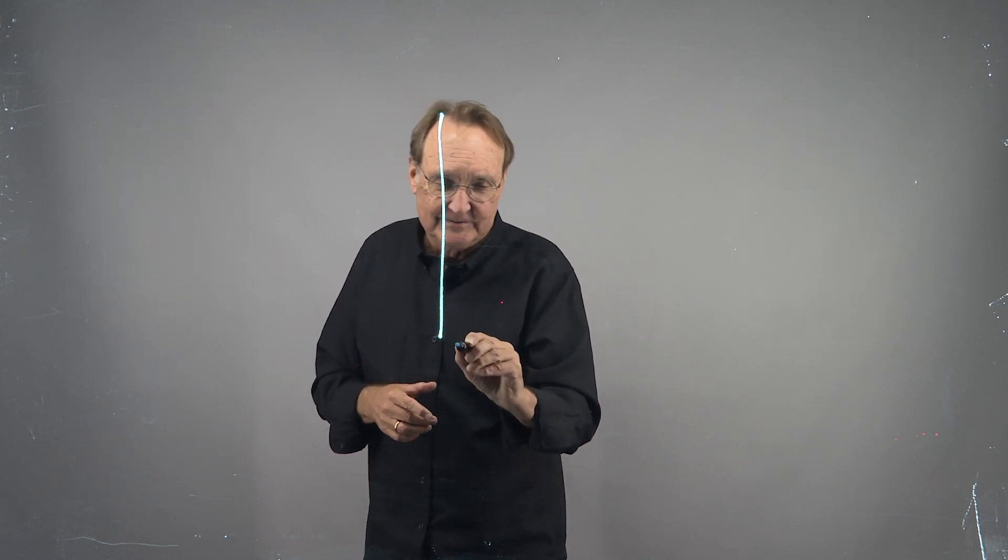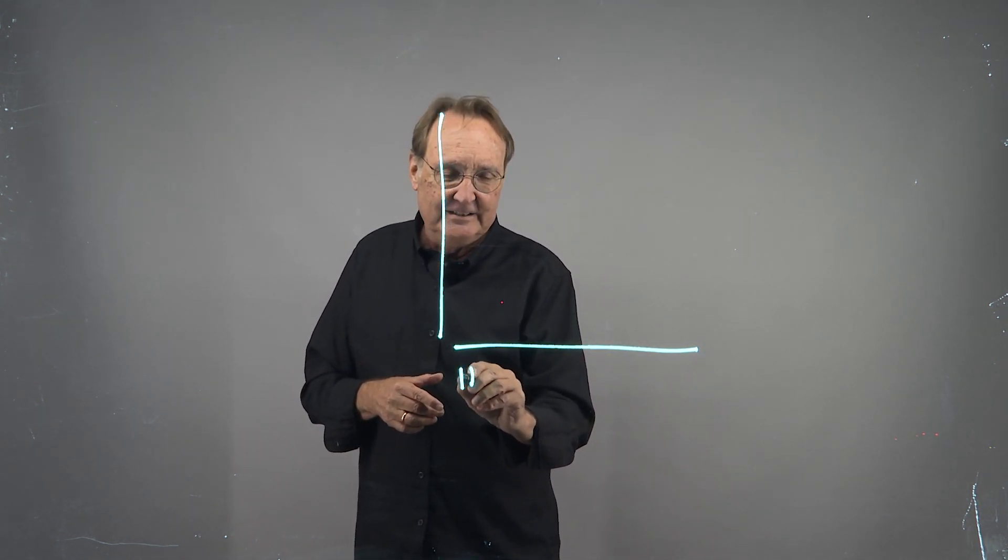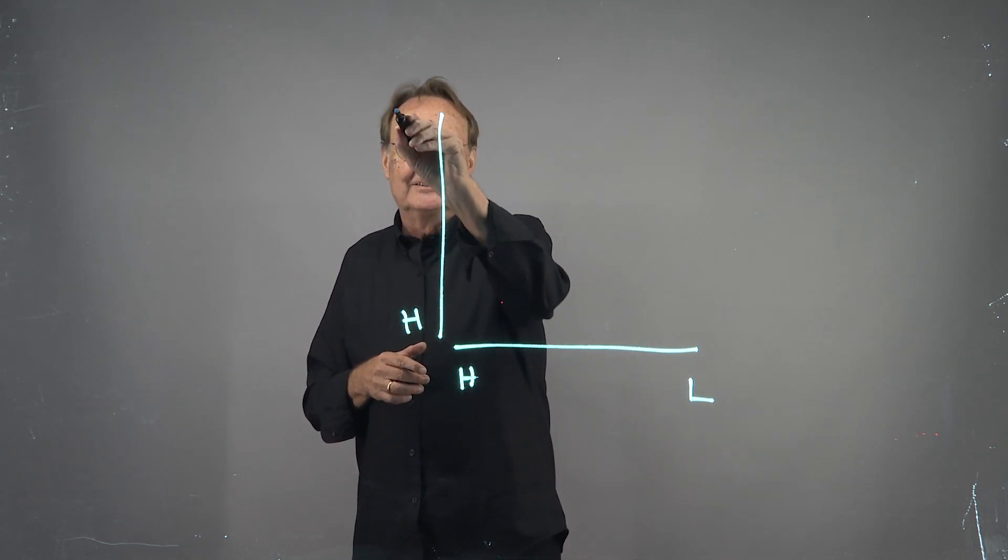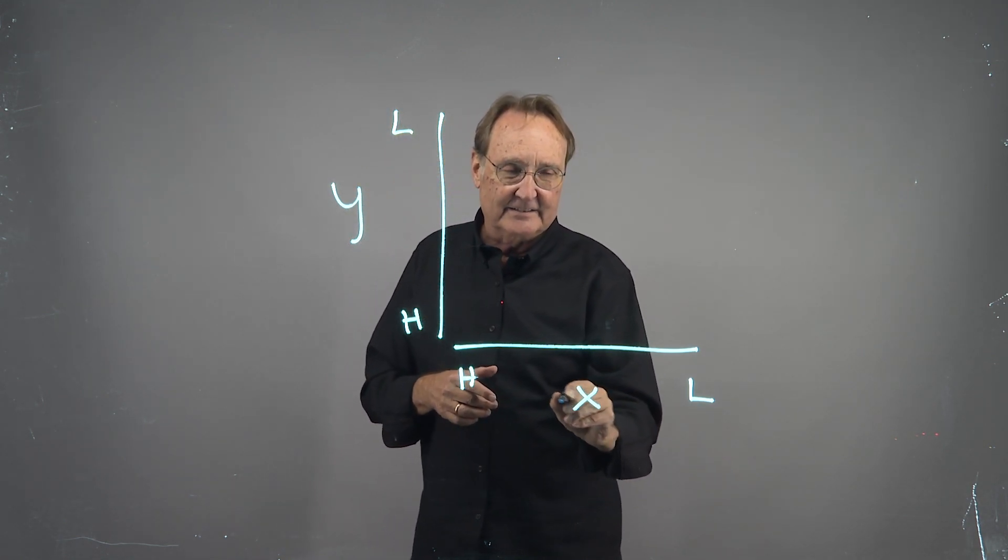So a trade-off - we have two dimensions. We're going to say high here, low here, high here, low here. So we've got a Y and we've got an X.